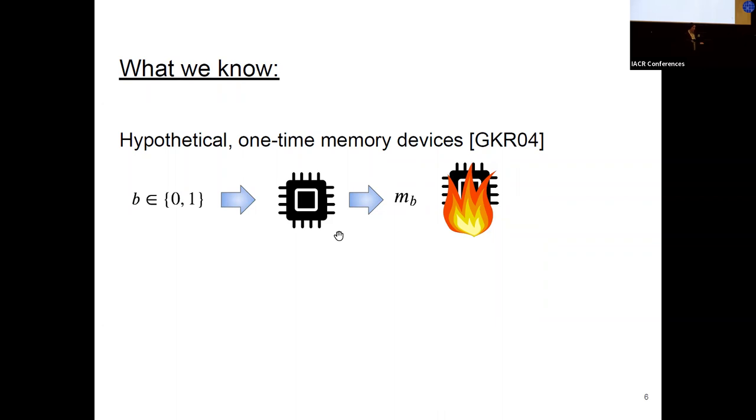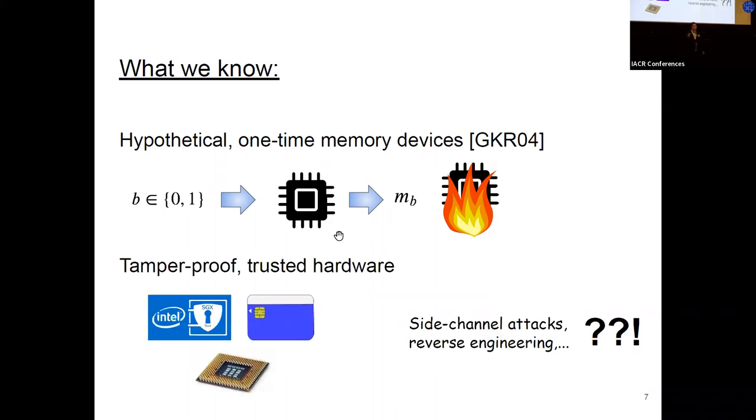This idea was first put forward by Goldwasser and Rothblum, who introduced the concept of one-time memory devices, which imitate the functionality of non-interactive oblivious transfer tokens. They introduced these gadgets to use them to build one-time programs from garbled circuits. In their paper, they discussed general directions on how to construct these gadgets without any real-world construction. The only way we know to construct these memory devices is by tamper-proofing the computation, while assuming that these sophisticated hardware tokens are resistant to side-channel attacks and reverse engineering.